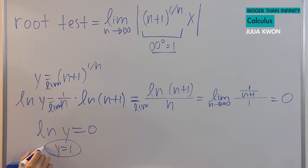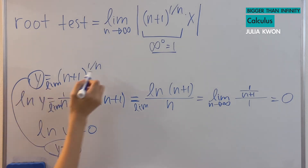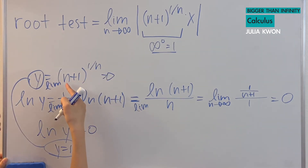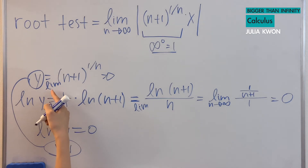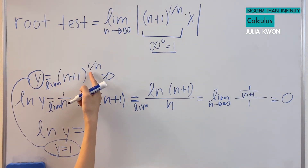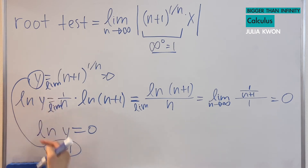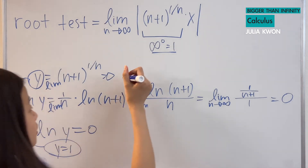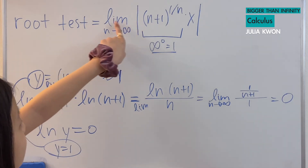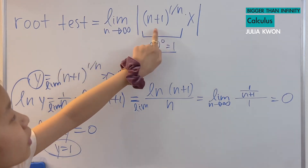Since ln y equals 0, that means y equals 1, because ln 1 equals 0. So the limit as n approaches infinity of n plus 1 to the power of 1 over n is equal to 1. That's why when we took that limit in the root test, it equaled 1.